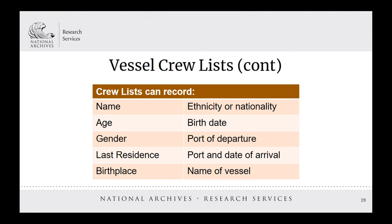Vessel crew lists are similar to standard passenger arrival records, but there are normally fewer pieces of biographical information recorded. Information listed could include name, birth date and birthplace, last residence, nationality, and details about the vessel where they served.